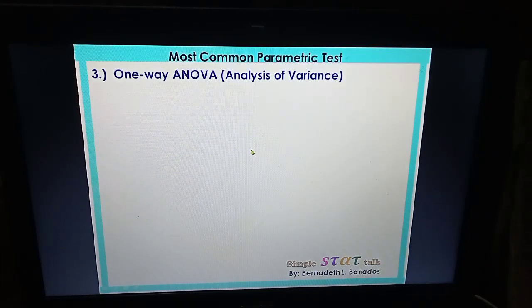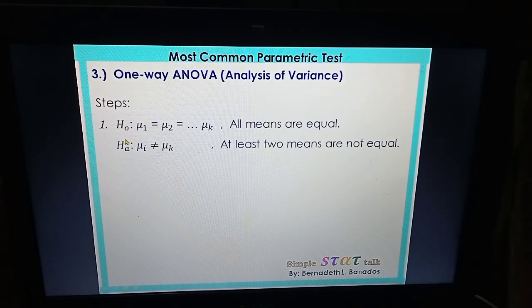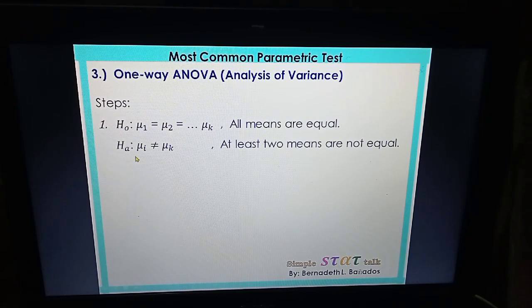These are the steps in performing one-way ANOVA. First, you need to set the null and alternative hypothesis. Null is always all means are equal, and then the alternative hypothesis, at least two means are not equal.